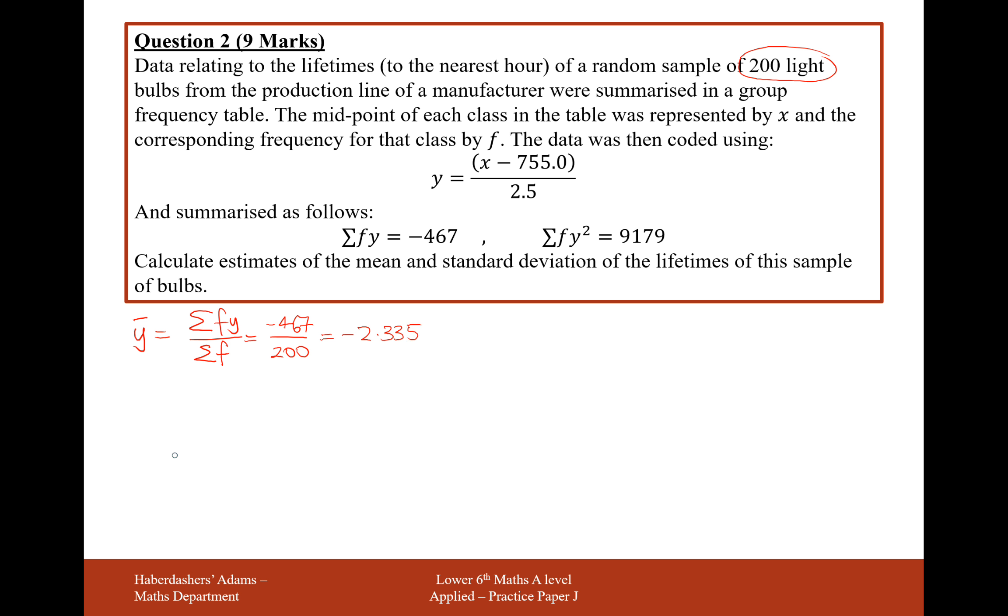To work out X bar, the mean of the light bulbs, we plug this into the formula. So Y bar, which equals -2.335, equals X bar minus 755 over 2.5. We're using exactly the same formula, just with bars. Now we rearrange to get X bar: times by 2.5 and add on 755, and we get X bar = 749.1625.